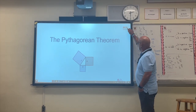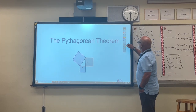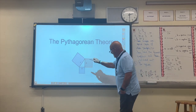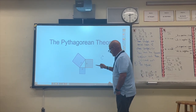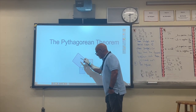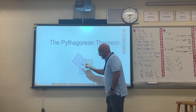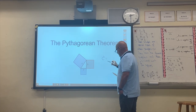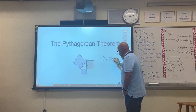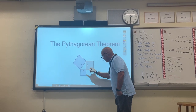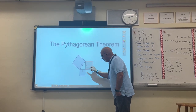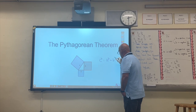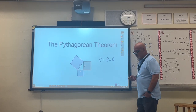What the Pythagorean theorem says is that c squared — the area of the square formed by squaring c — is going to be equal to the sum of the area created when you square side a and side b of the triangle.